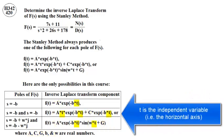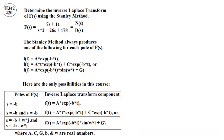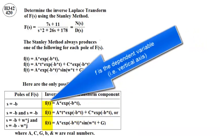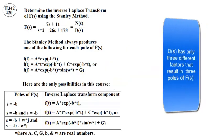T is the independent variable, in other words, the horizontal axis of a graph. F is the dependent variable, in other words, the vertical axis of a graph.